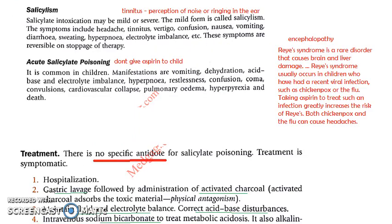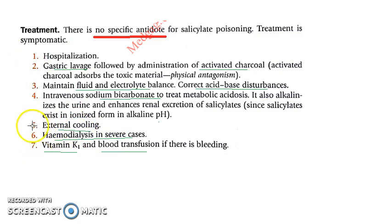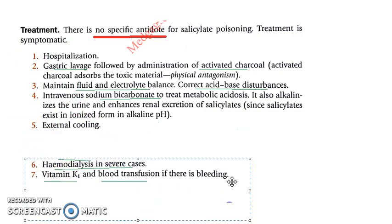You can also add salicylism — salicylate poisoning — to the adverse effects. Symptoms include headache, vertigo, confusion, tinnitus, nausea, and vomiting. There is no specific treatment; you hospitalize the patient, perform gastric lavage, give activated charcoal, maintain fluid and electrolyte balance, correct acid-base disturbances, give intravenous sodium bicarbonate for metabolic acidosis, cool the patient externally, and in severe cases use hemodialysis, blood transfusion, and vitamin K if there is bleeding.